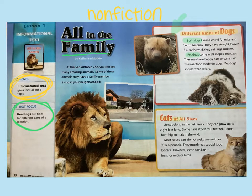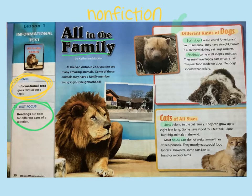Next one: Cats of All Sizes. Lions belong to the cat family. They can grow up to eight feet long. Some have stood four feet tall. Lions hunt big animals in the wild. Most house cats do not weigh more than 15 pounds. They mostly eat special food for cats. However, some cats like to hunt for mice or birds. That rectangle talked about different types of cats — lions and the cats you might have at home.